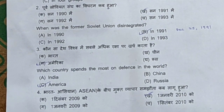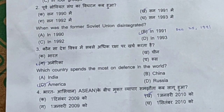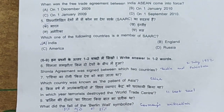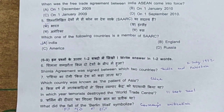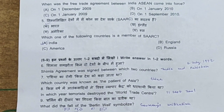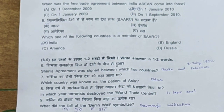Question 4: When did the free trade agreement between India and ASEAN come into force? Options: 1st December 2009, 1st January 2010, 1st January 2009, 1st September 2010. Students, the correct answer is 1st January 2010.